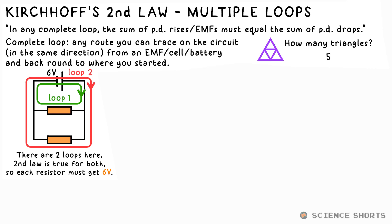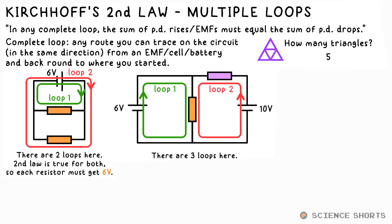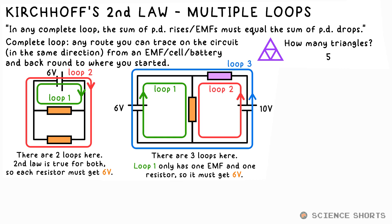How is that helpful? It's actually when we have more complex circuits that we have to use Kirchhoff's second law. How many loops with EMFs can you see? The answer is three — one, two, and three. Is there a loop that we can figure anything out for? Yes. Loop one only has one EMF and one resistor, so the resistor must have 6 volts, regardless of whatever else is going on.